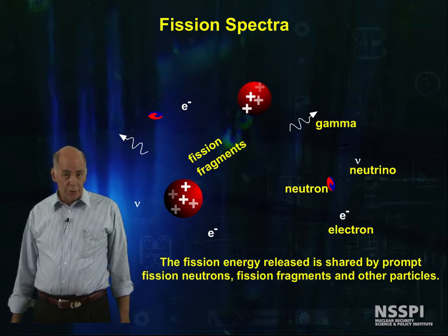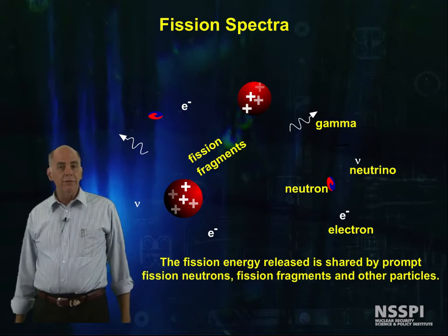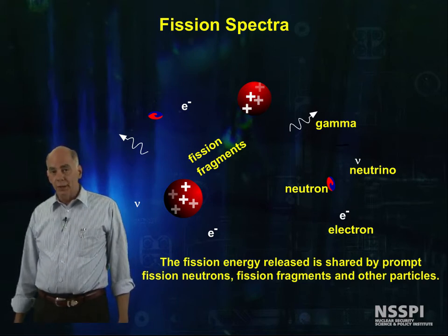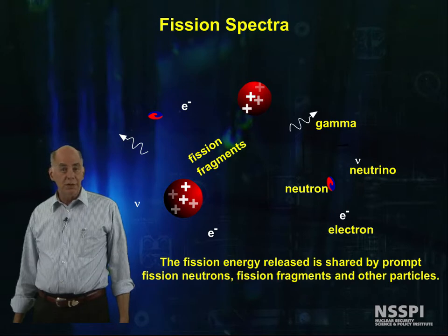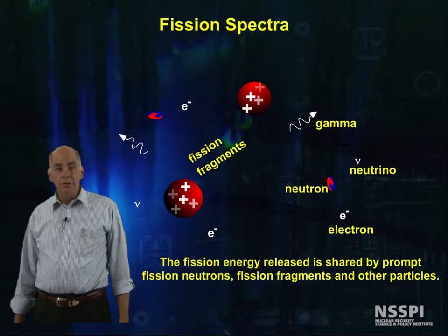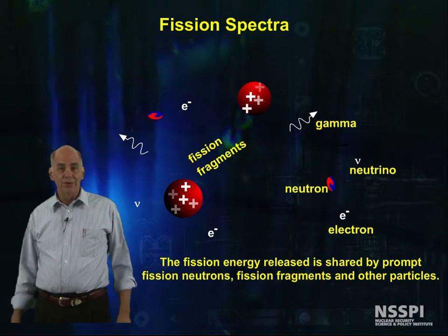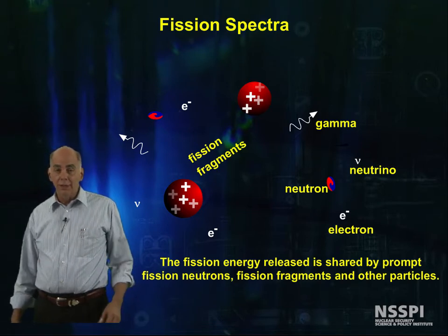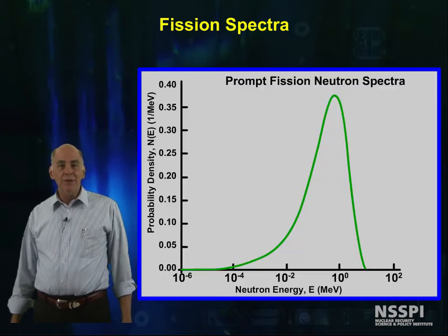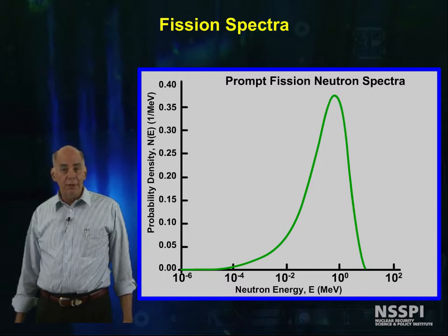These fission neutrons are produced in a spectrum of energies. We think that the neutrons boil off from the neck connecting the two fission products just as they are fissioning. So the energy given to these neutrons depends on the multiplicity of the neutrons, the final energy of the two different fission products, how much of this energy is passed to the neck as the fission proceeds, breaking into two parts, and half a dozen other things.